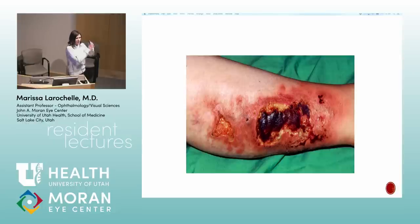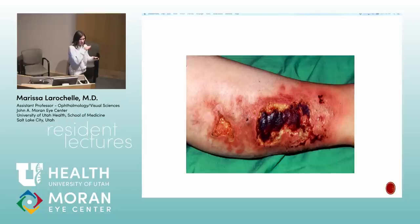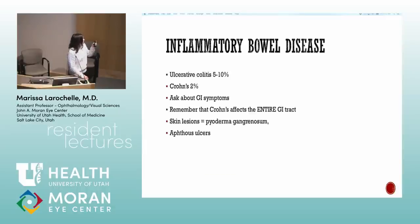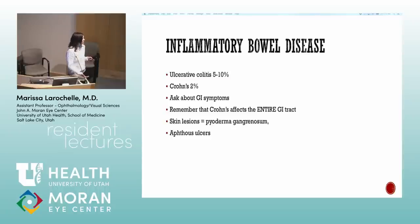In these slides, the photo comes first and then the syndrome. This photo shows the skin lesions of inflammatory bowel disease: pyoderma gangrenosum. IBD-associated uveitis is most often with ulcerative colitis, but anterior uveitis with Crohn's disease also occurs. Always ask about GI symptoms.